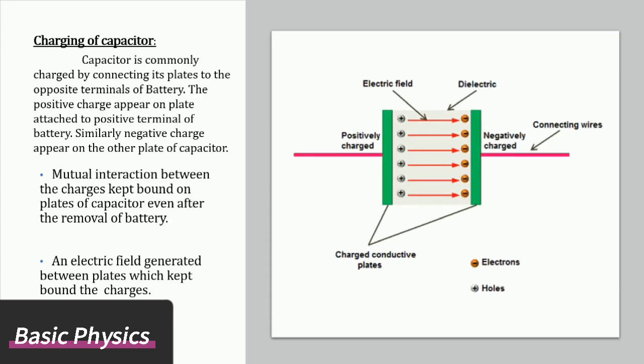Mutual interaction between the charges keeps them bound on plates of capacitor even after the removal of battery. An electric field generated between plates keeps the charges bound. Charge stored in capacitor is due to electric field between two charges.